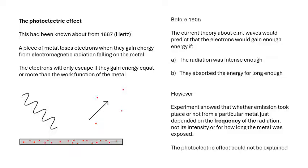This also couldn't be explained by wave theory. When demonstrated in class, a piece of zinc is used: with a very bright visible light source, nothing happens. But with ultraviolet light — even very dim ultraviolet — the electrons gain enough energy and escape. It's all to do with the frequency of the radiation.